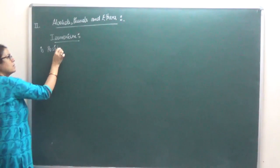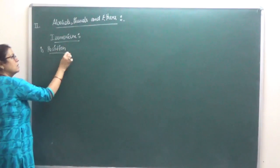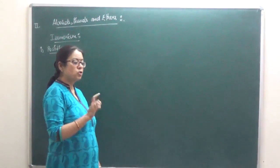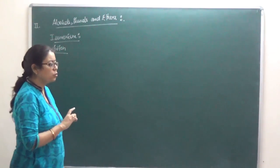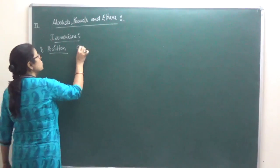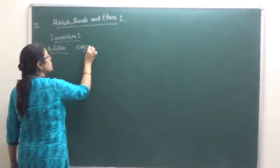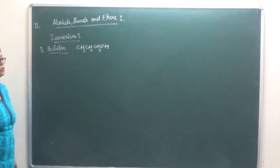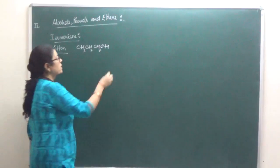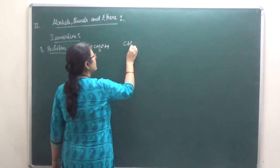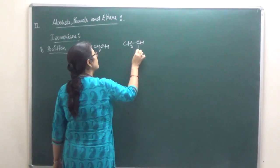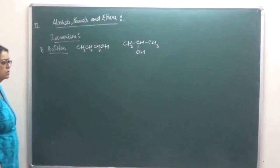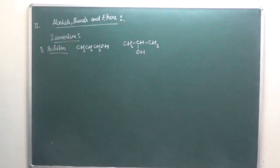We already know what position isomerism is - where the position of the functional group is going to change. So if we have CH3-CH2-CH2-OH, this is propan-1-ol. If the OH position changes, we get propan-2-ol.